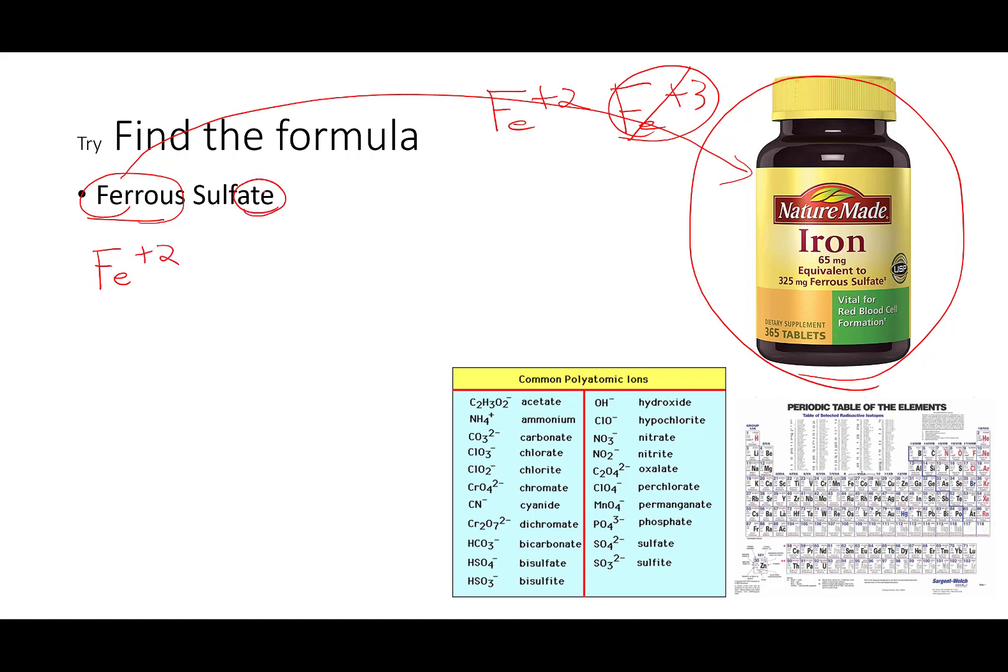Sulfate. That's an ate. Ate is a polyatomic. So, that's this one. SO4 plus two. Positive is written first. Are they the same charge? FeSO4. Do I put parentheses anywhere? No, because I do not have to make a multiple of any of the polyatomic, so I'm good.